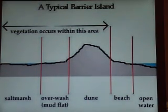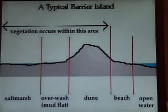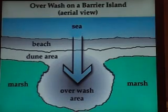A typical barrier island, as you can see, vegetation occurs within these areas from the beach back to the salt marsh. They open the waters, they've got a dune on the barrier islands, overwashes, called a mudflat, then performs the salt marsh.